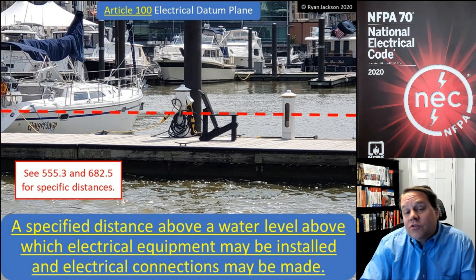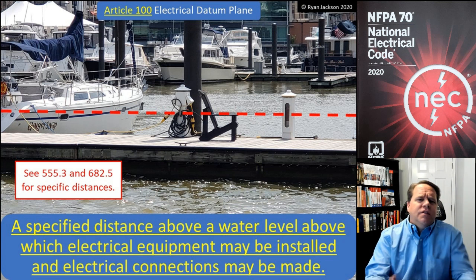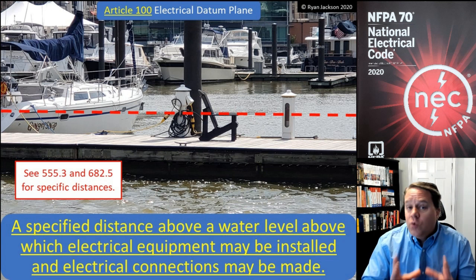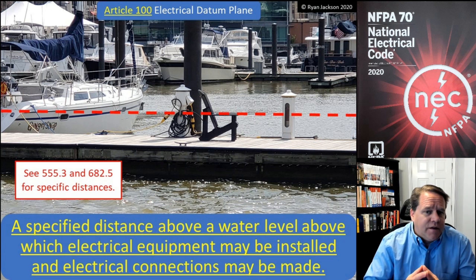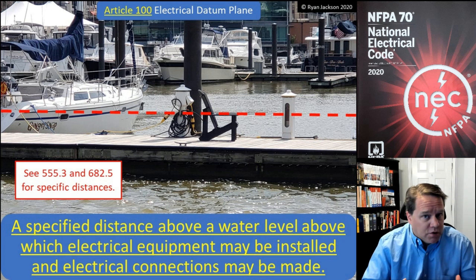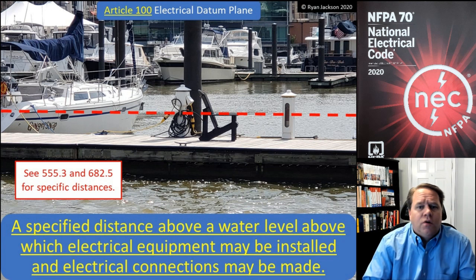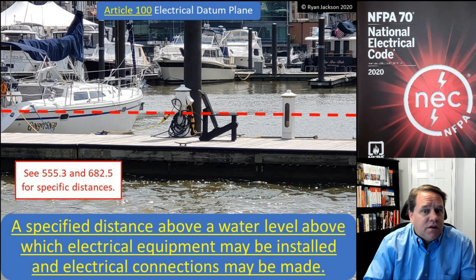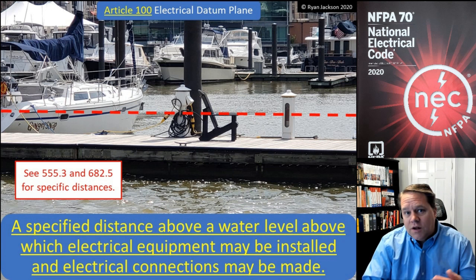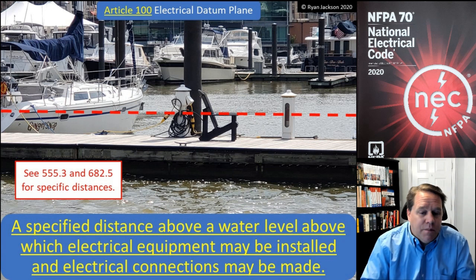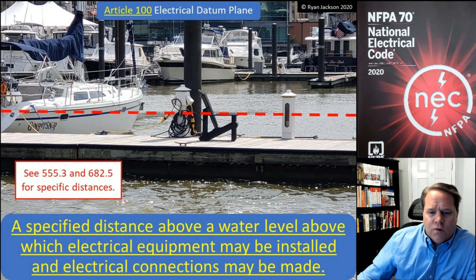Next up we have electrical datum plane. This term is only used in two articles in the NEC: article 555, which covers marinas, boat yards, floating buildings, and similar installations, and article 682, which covers natural and man-made bodies of water. The electrical datum plane is defined as a specified distance above a water level above which electrical equipment may be installed and electrical connections may be made.